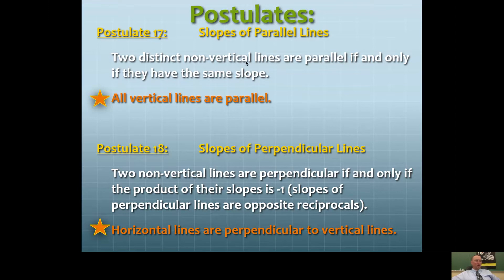They say non-vertical because vertical lines have an undefined slope. Every other slope has a numerical value to it, so if the numerical values are the same, then the lines are parallel.